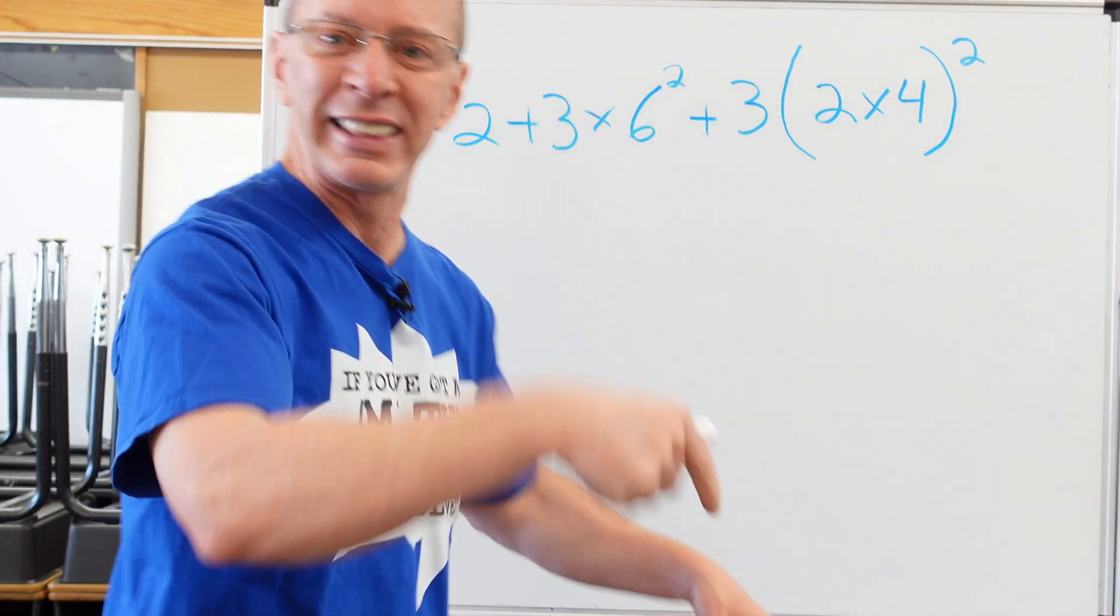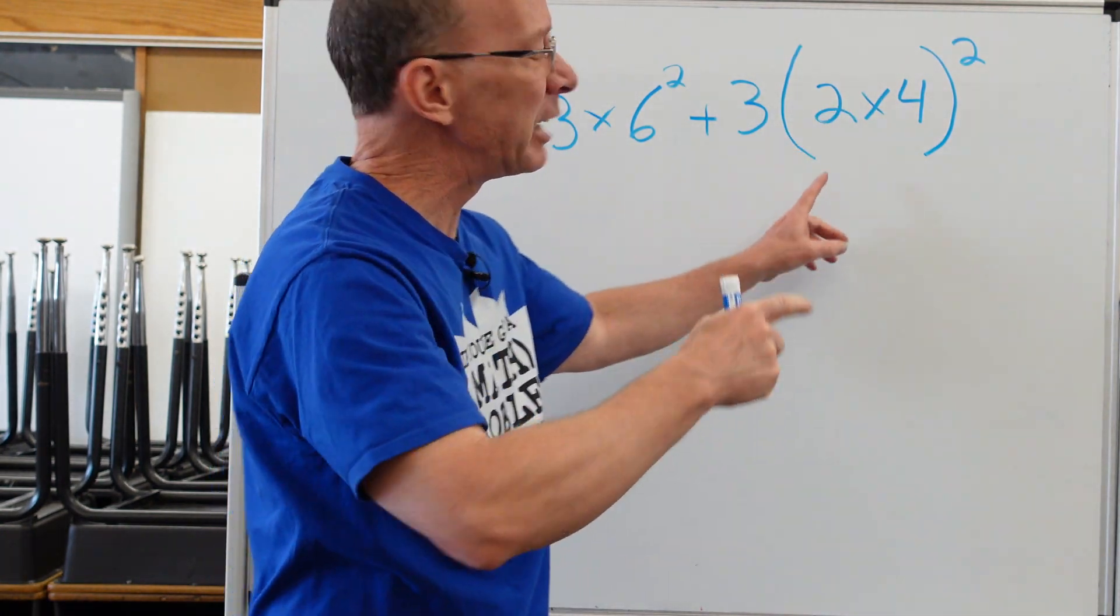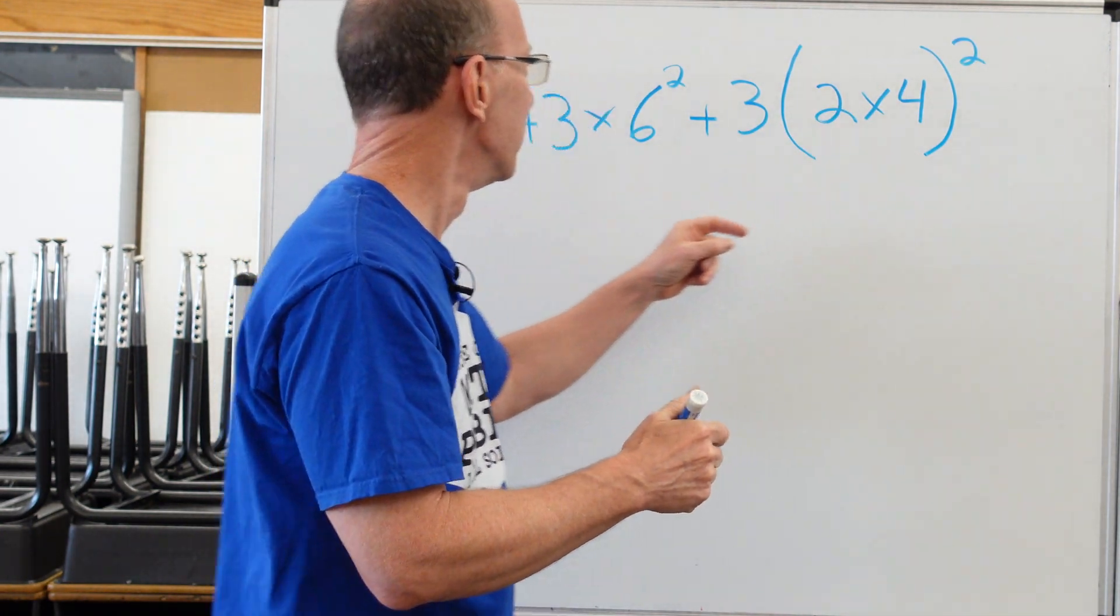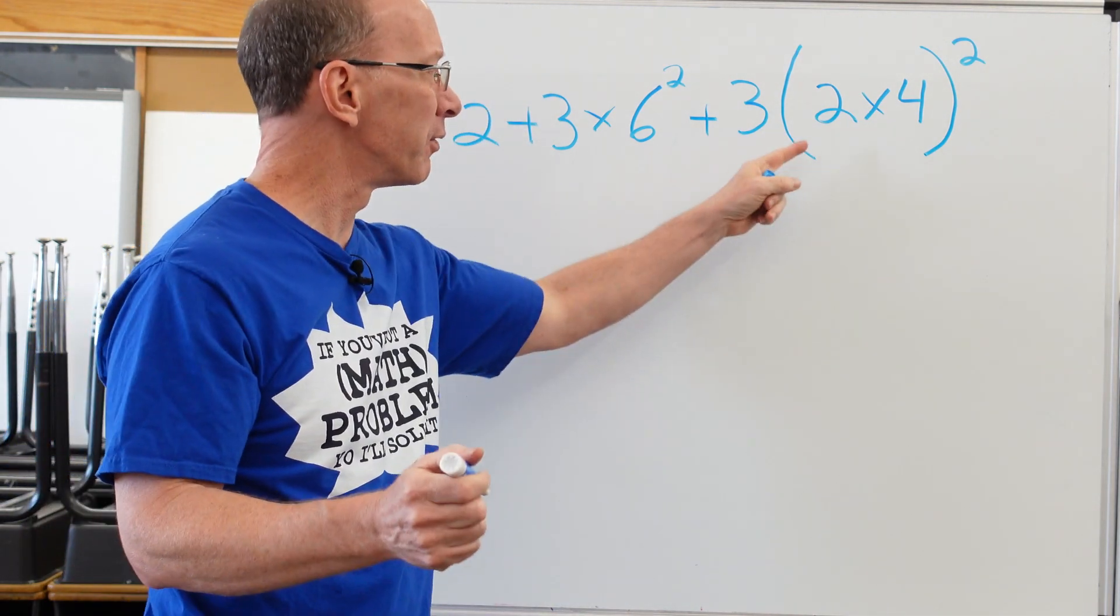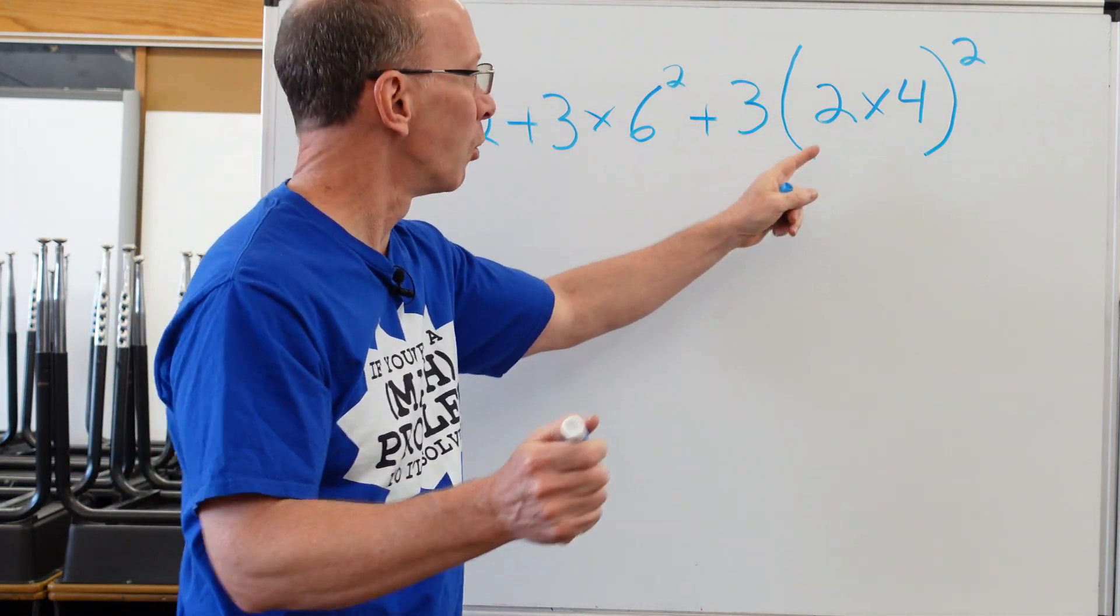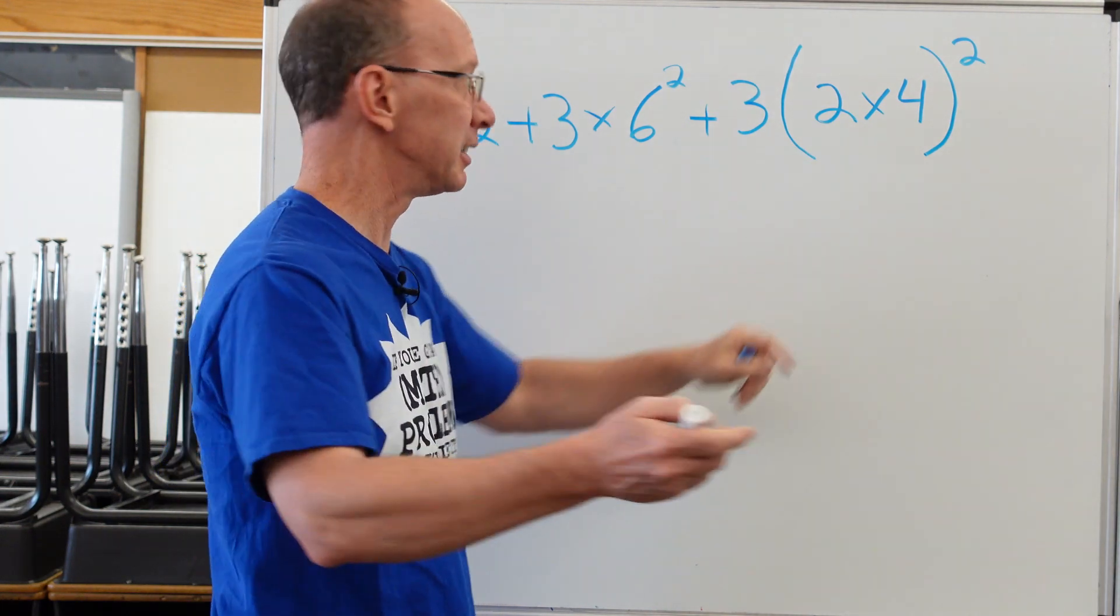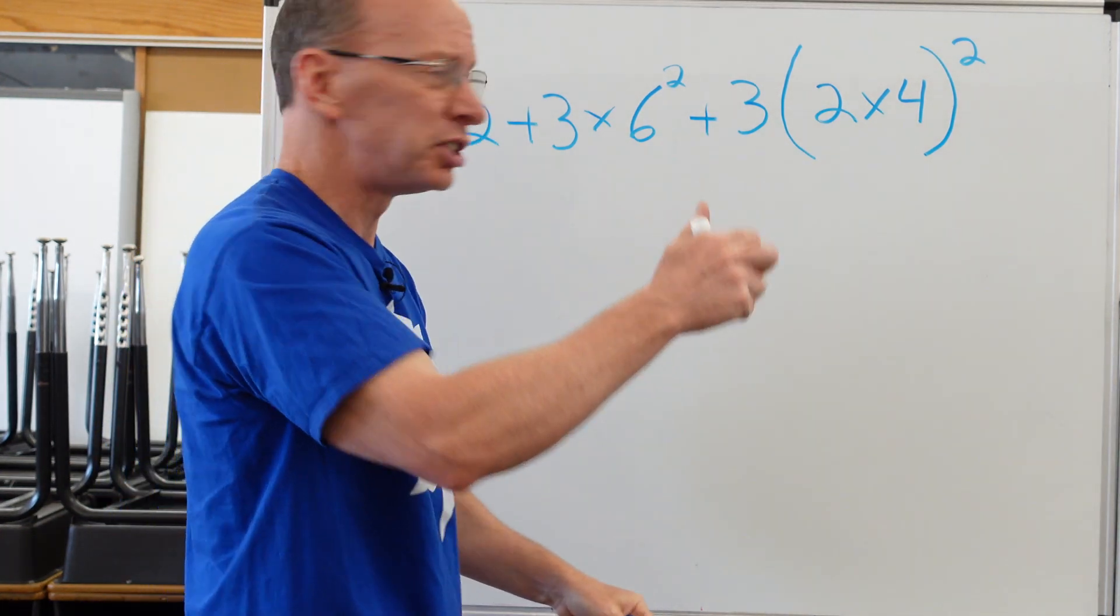I see a parenthesis right here. So let's go ahead and rewrite this whole problem and figure out what's inside that parenthesis. What is it? Four times two is eight. So when we get over there, we'll do eight.